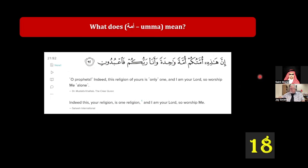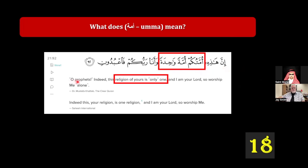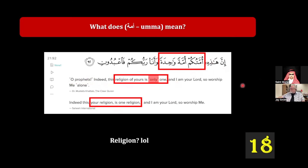Moving on to number 18: the word 'umma.' What does it mean? Dr. Mustafa Khattab's Clear Quran says 'indeed this religion of yours is only one,' but in Arabic it says 'ummatakum.' Sahih International also says 'your religion is one religion.' But 'umma' is never 'religion' — the correct word is 'nation.' Why do they have it as 'religion'? This is a very strange situation.